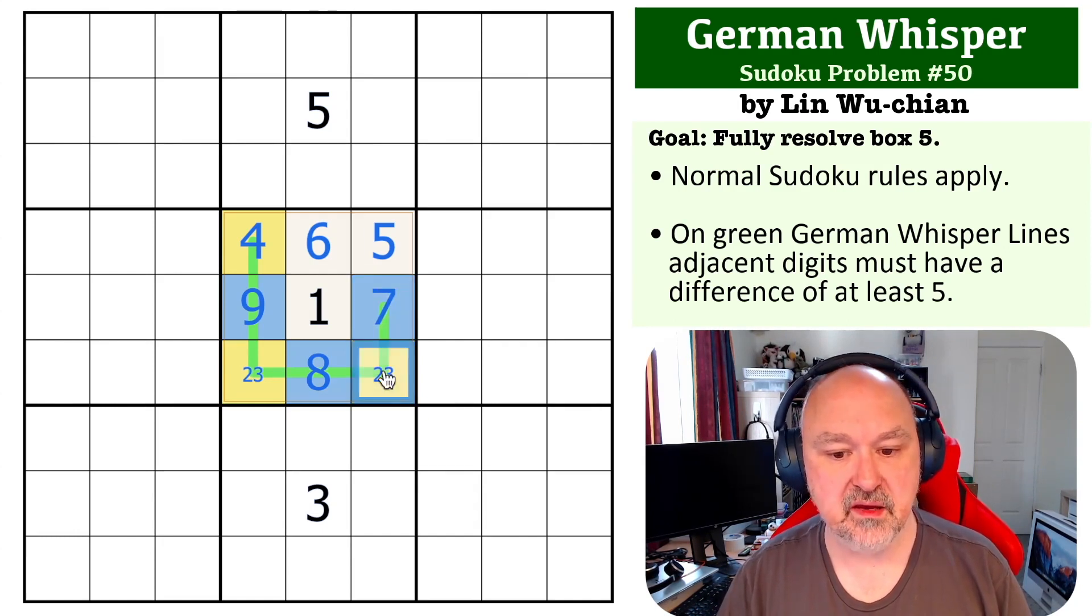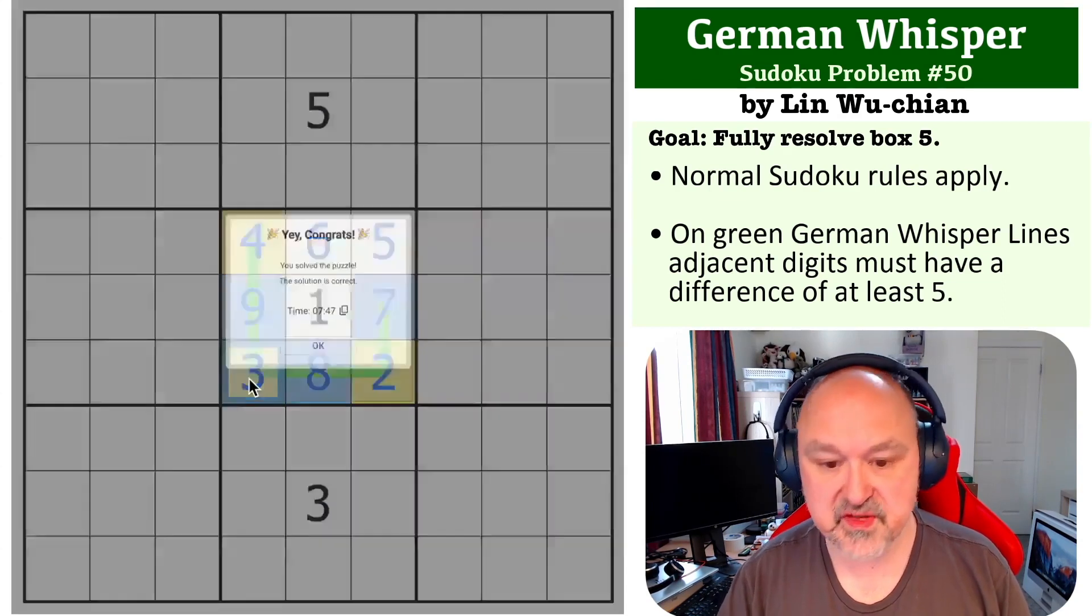The seven cannot be close to three for the same reason, it's not far enough away. This becomes the two, this becomes the three, and that is the solution to the problem.